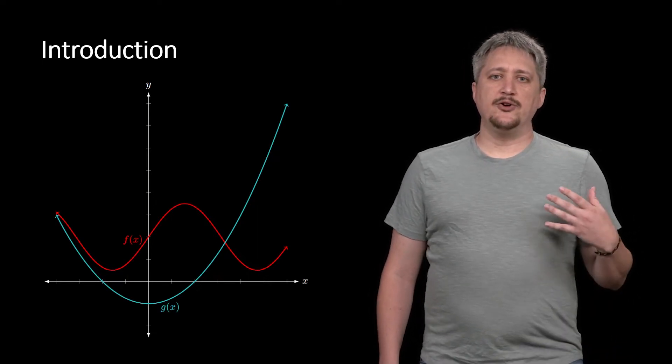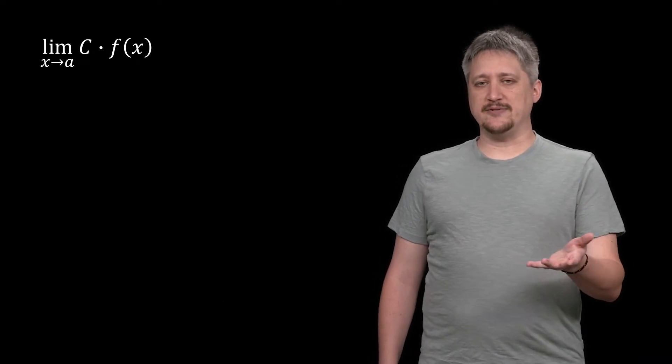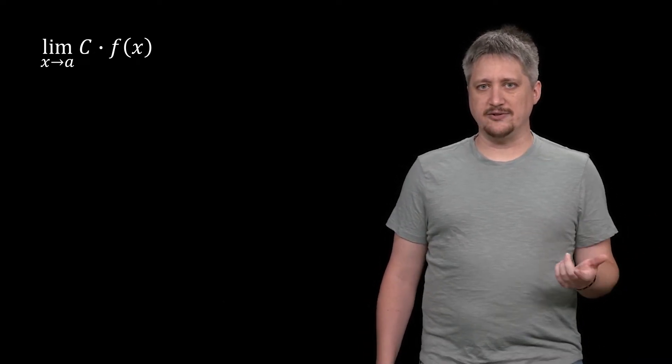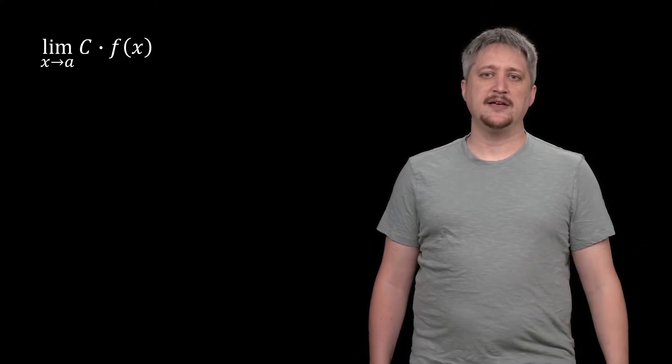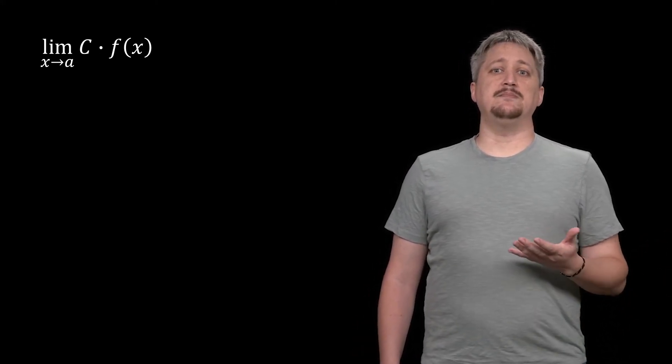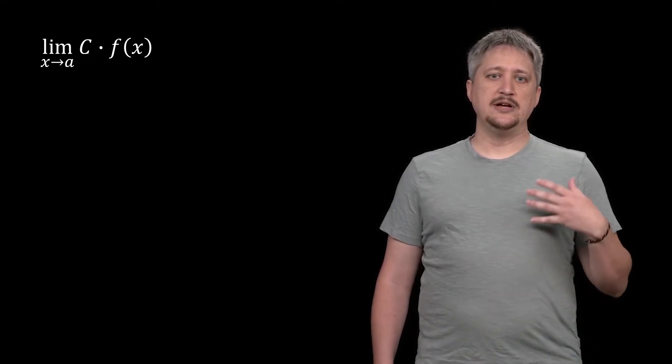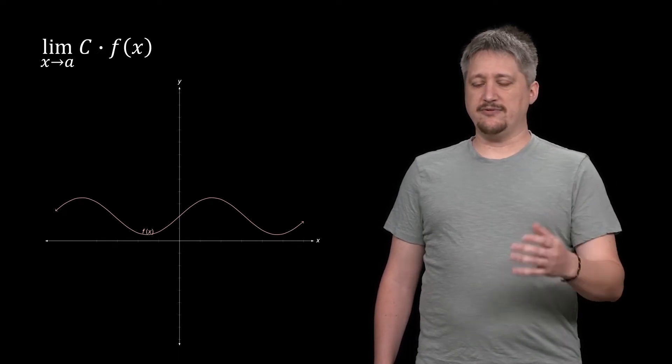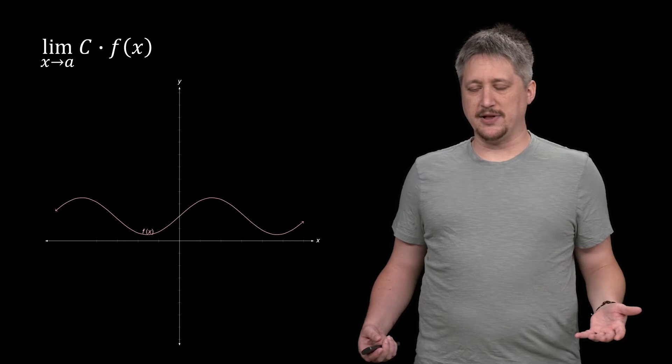The first one we're going to think about is c times f(x). So c here is just any kind of real number like 5 or 17 or pi. The idea is that it's this constant multiple. And the question is what does that do to the function f?